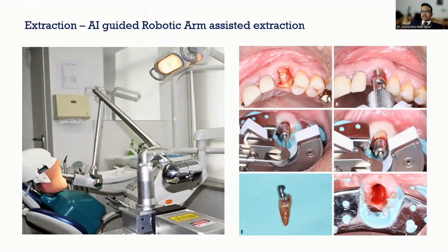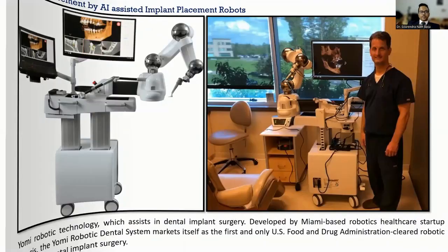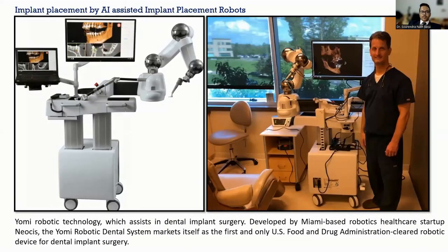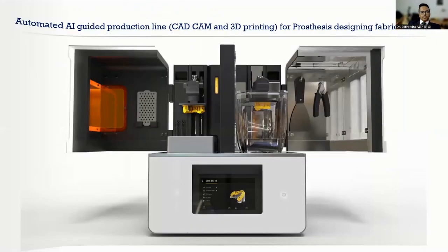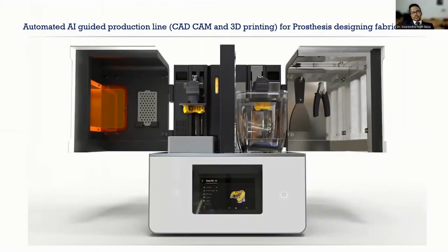Robotics is another emerging trend. Robots have been made that are capable of not only extracting teeth but also placing implants in the jaw. For oral and maxillofacial prosthesis fabrication, automated AI-guided CAD-CAM and 3D printing devices have also been used, demonstrating promising and fascinating results.